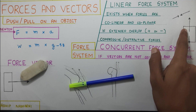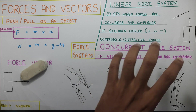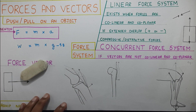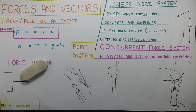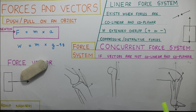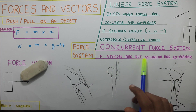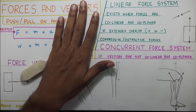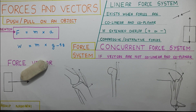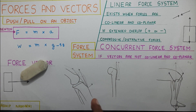Now moving on to concurrent forces — this is where things get a little interesting. The concurrent force system works when the vectors are not collinear and coplanar, meaning when the vectors are not in the same plane or not in the same line. That's when the concurrent force system is used to figure out where exactly the final force will be.